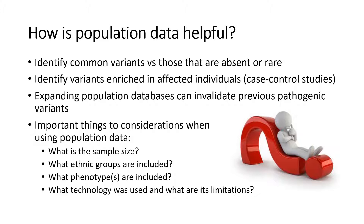Population data also allows us to compare the frequency of a variant in affected individuals versus in the unaffected individuals or the general population. When a variant is seen more often in affected individuals, it starts to suggest that the variant is contributing to disease. If the difference in allele frequency between cases and controls is statistically significant, we can say the variant is enriched in that group.